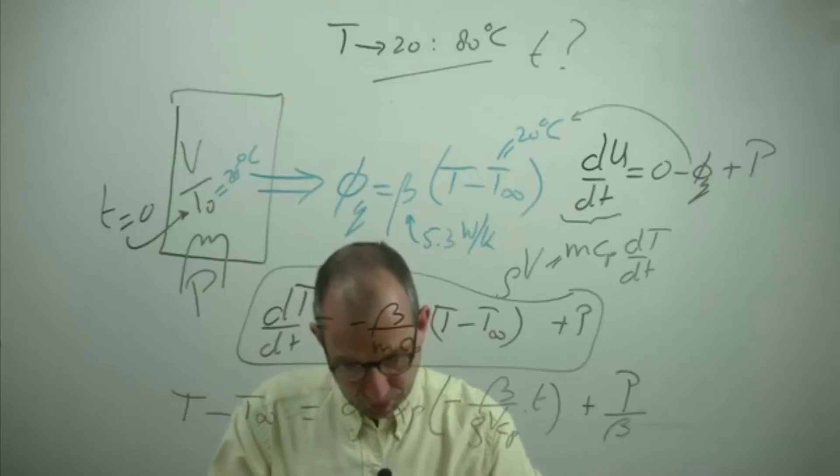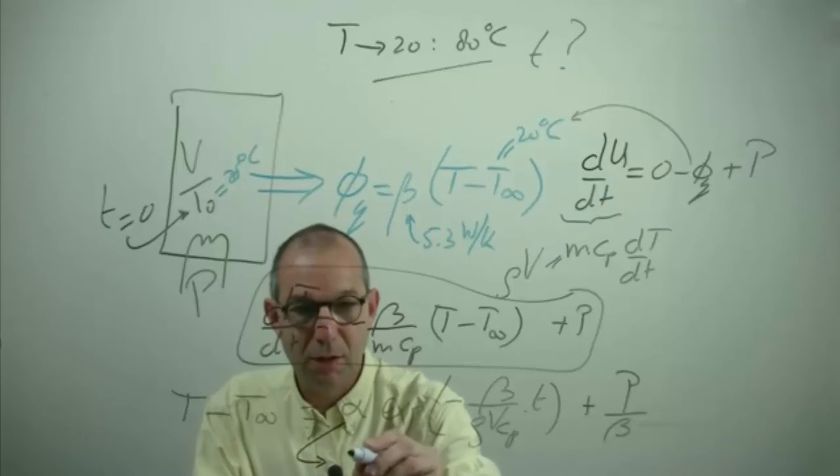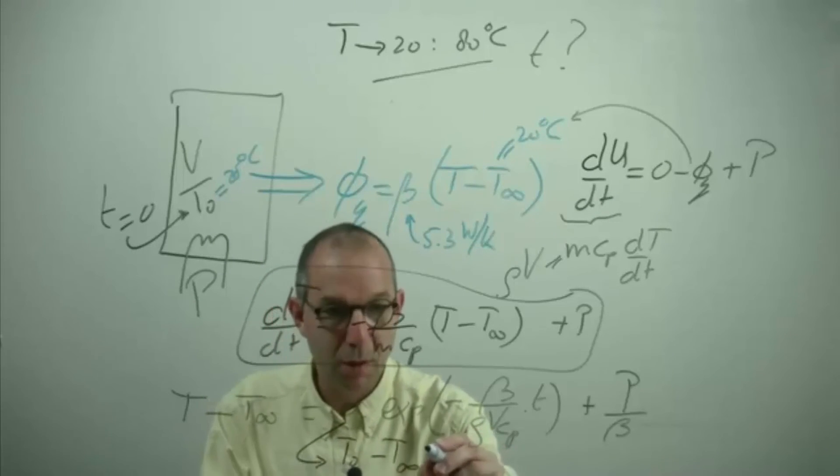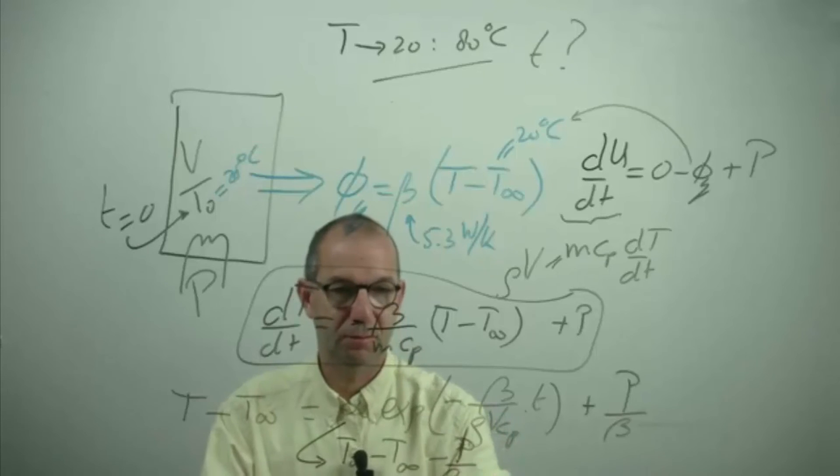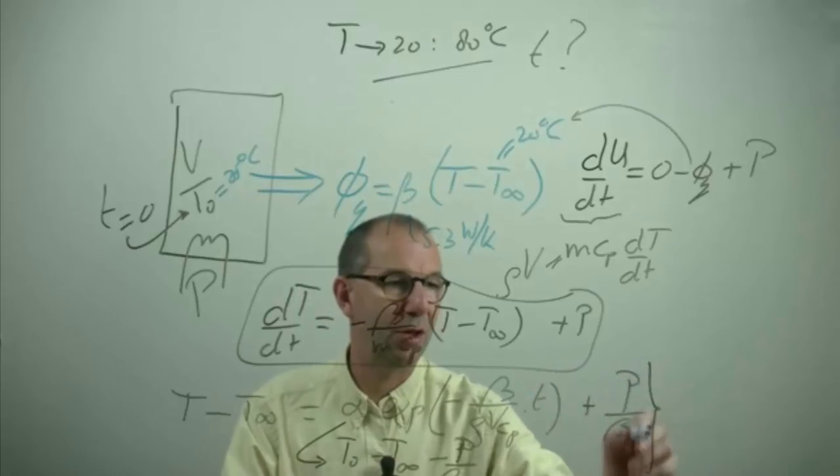And that alpha in itself is if you do that T0 minus T infinity minus P over beta. With this I have the total solution fixed and I can compute the required time.